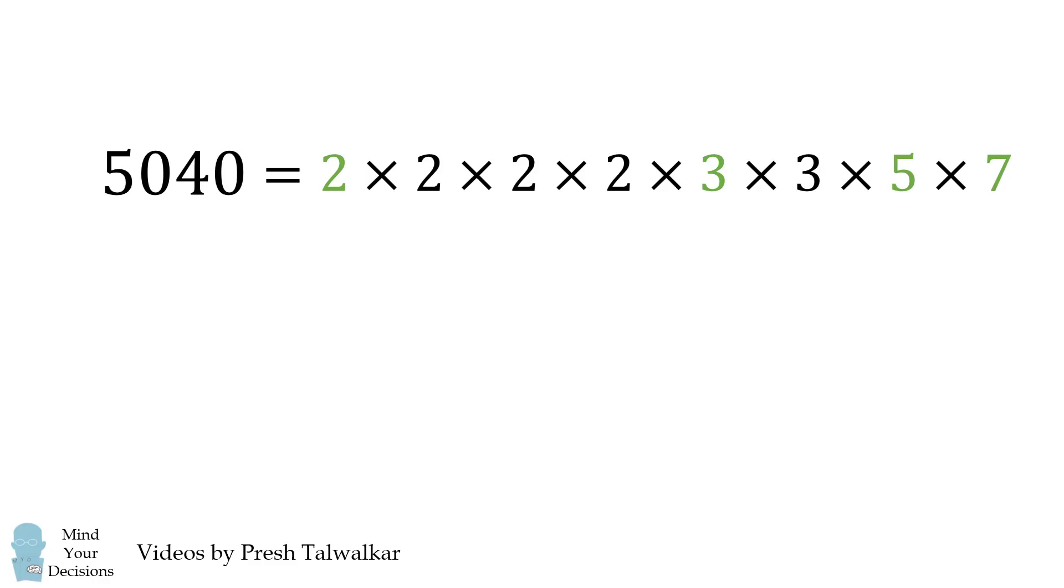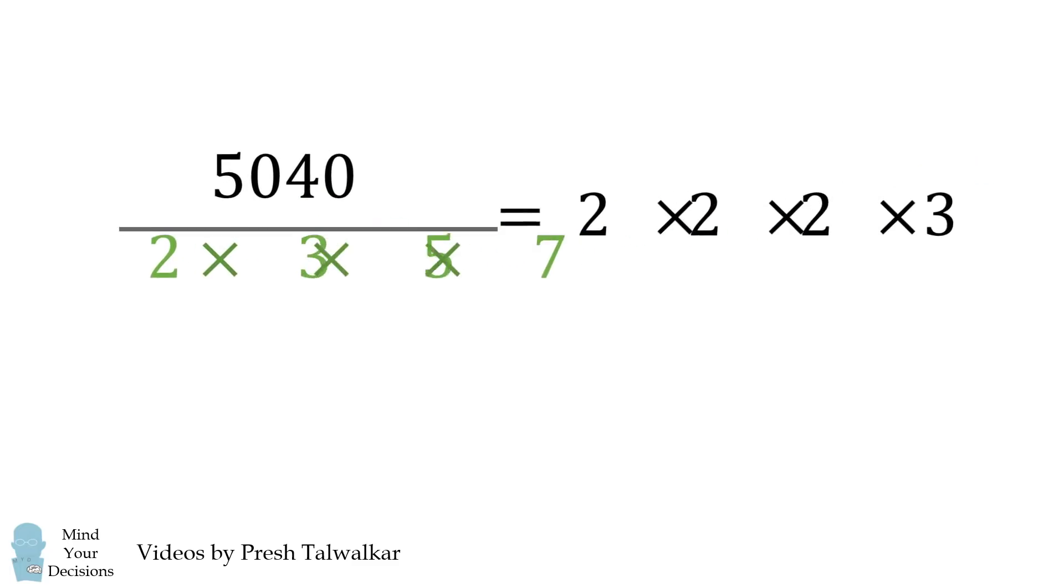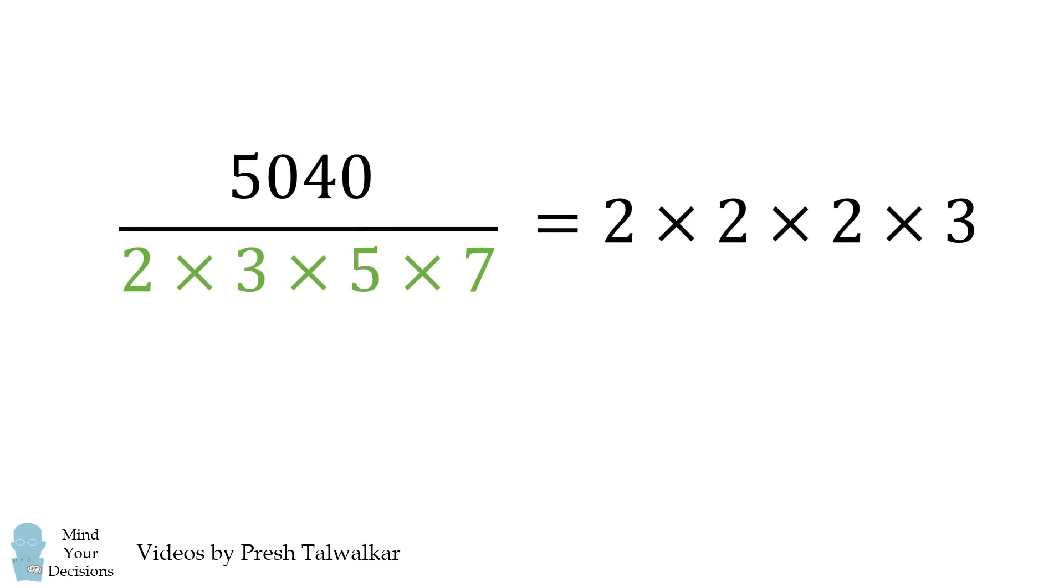We divide both sides by 2, 3, 5, and 7. And we end up with the quotient of 5040 by its unique prime factors. The result will be 2 cubed times 3, and that's equal to 24. And that's our answer.